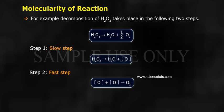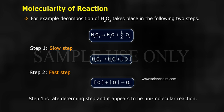O plus O gives O2. Step 1 is the rate determining step and it appears to be a unimolecular reaction.